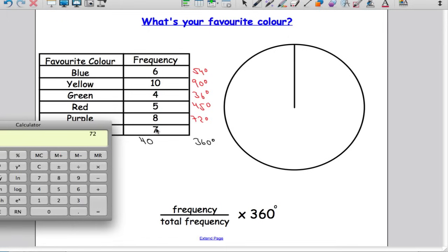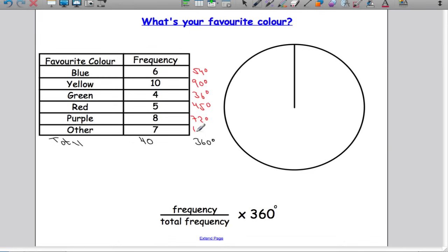And then finally, 7 divided by 40, multiply that by 360 degrees, gives us 63 degrees.